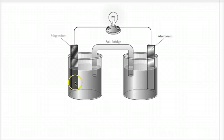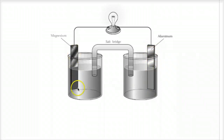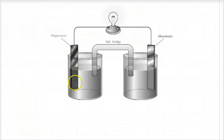The electrodes are the places where oxidation and reduction actually occur. Now, these electrodes sometimes are involved in the actual oxidation and reduction, and sometimes they are simply the place for oxidation and reduction. So it's important to understand that electrodes themselves may or may not be involved in the actual oxidation-reduction reactions — sometimes they are just conductors that allow for it to occur.